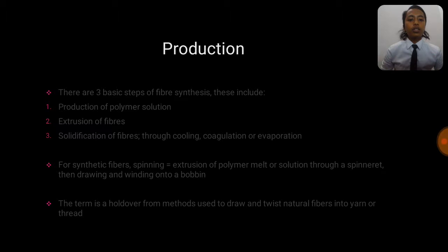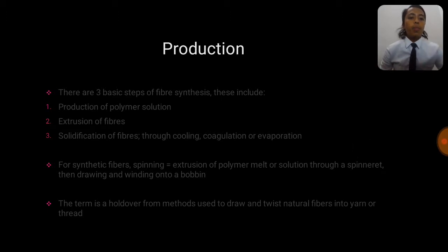For synthetic fiber spinning, the extrusion of polymer melt or solution through a spinneret then drawing and winding into a bobbin. The term is a holdover from methods used to draw and twist natural fibers into yarn or thread. The term spinning has been borrowed from the spinning process required to make yarns from natural fiber such as wool and is somewhat incorrect. In this process, the fiber solution is extruded or spun out.